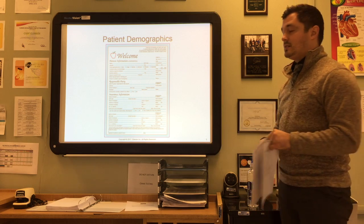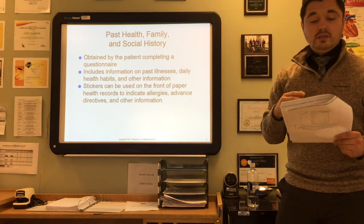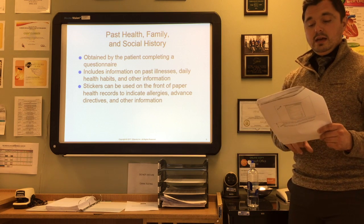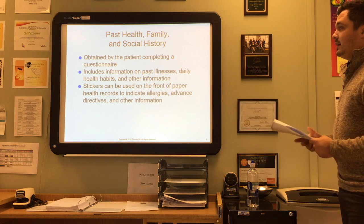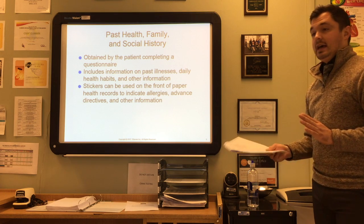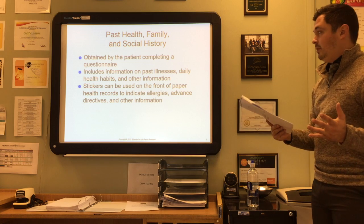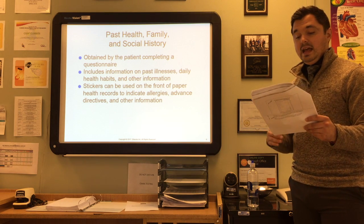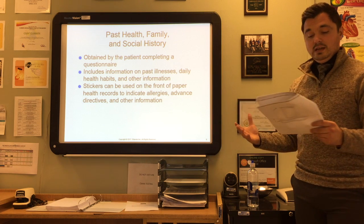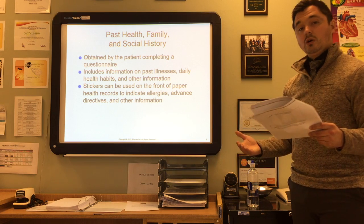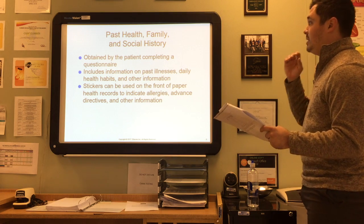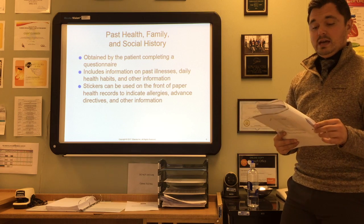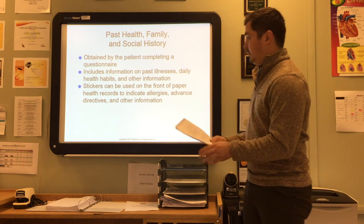The past, family, and social history are still in the subjective information section of the medical record. Past health history includes information about previous illnesses and injuries, typically obtained through a questionnaire covering past illnesses, daily health habits, and other personal information. The patient's family history covers the physical condition of various family members, any illnesses or diseases they may have had, and causes of death. The social history includes lifestyle information such as whether the patient smokes, drinks alcohol, or uses recreational drugs. Stickers can be used on the front of the health record to indicate allergies, advanced directives, and other information developed by the office policies and procedures manual.